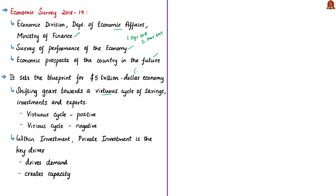In economics, two cycles are discussed: one on a positive note called the virtuous cycle, and one on a negative note called the vicious cycle. The virtuous cycle enables animal spirits in an economy and encourages important factors of economic growth such as investment, productivity, growth, job creation, demand and exports.